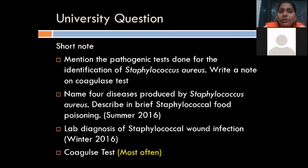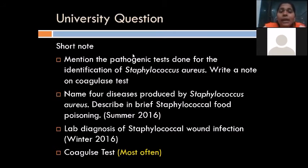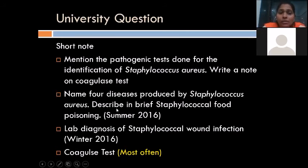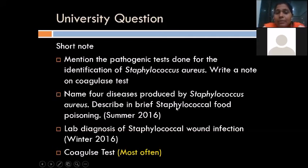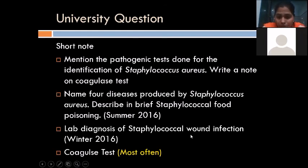You can get different short-note questions from this topic. The coagulase test has been asked the maximum number of times. There are also questions like: name pathogenic tests done for identification of Staphylococcus aureus with a note on coagulase test. In Summer 2016: name four diseases produced by Staphylococcus aureus and describe staphylococcal food poisoning. In Winter 2016: lab diagnosis of staphylococcal wound infection.